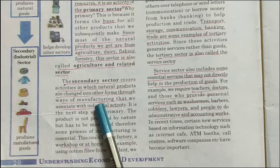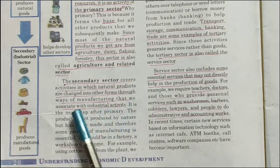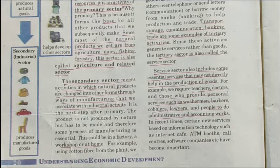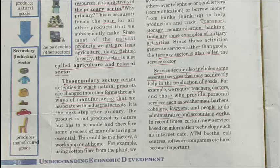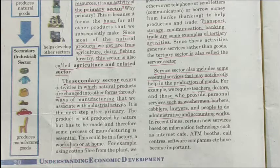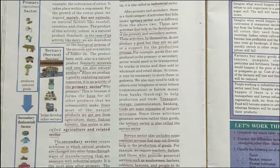The next sector is the secondary sector. It is mainly involved in manufacturing activity. It covers activities in which natural products are changed into other forms through manufacturing — associated with industrial activity. It is the next step after primary. For example, cotton is made into yarn and then turned into cloth, and sugarcane is turned into sugar or jaggery. This activity could be carried out at home, at a workshop, or in a factory. It is also called the industrial sector.